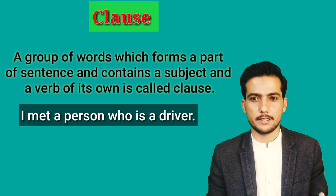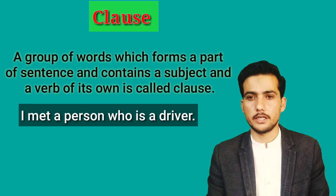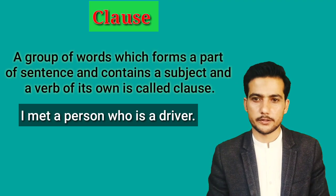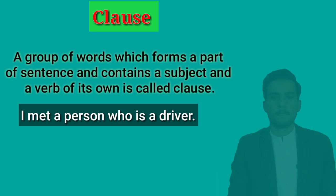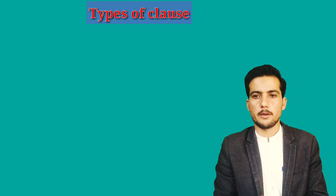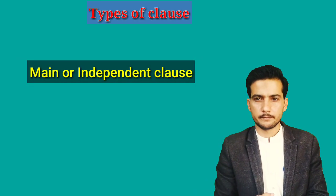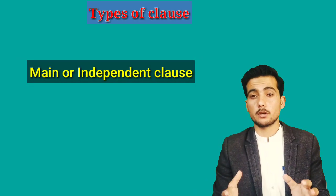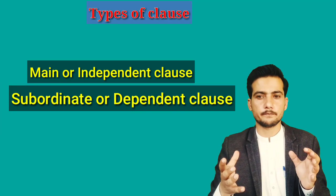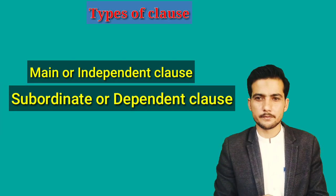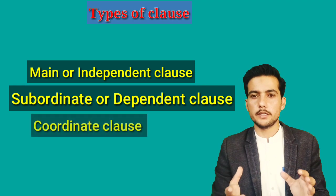Now let's discover how we can find whether a clause is dependent, independent, or coordinate. There are three types of clauses: the first is the main or independent clause, the second is the subordinate or dependent clause, and the third is the coordinate clause.